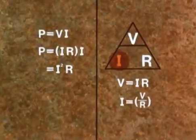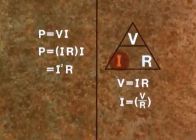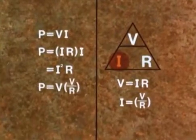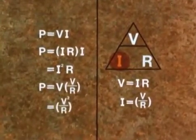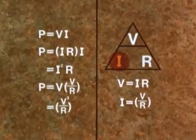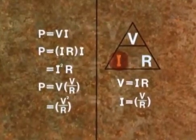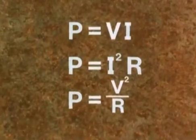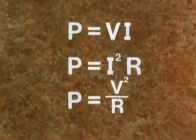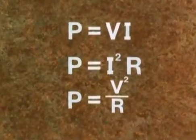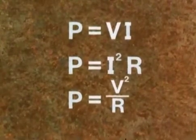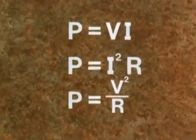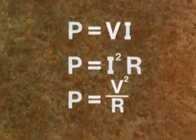Similarly, I equals V over R, and if we put this value for I in the power formula, we get P equals V squared over R. So we have three ways of expressing power: P equals V squared over R, P equals VI, P equals I squared R. These are all very useful formulas and should be learned by heart.